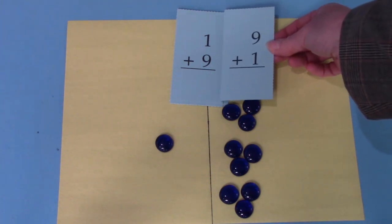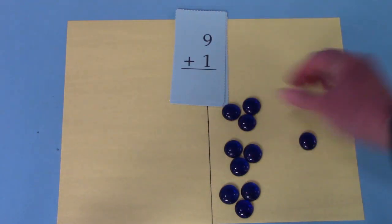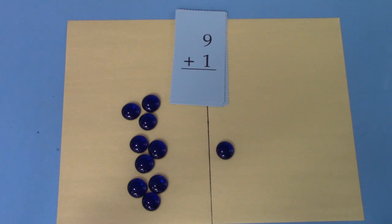The switcheroo fact is nine plus one. Well, if we put this one over here and these nine over here, is that going to change our sum? No. Our answer will still be ten.